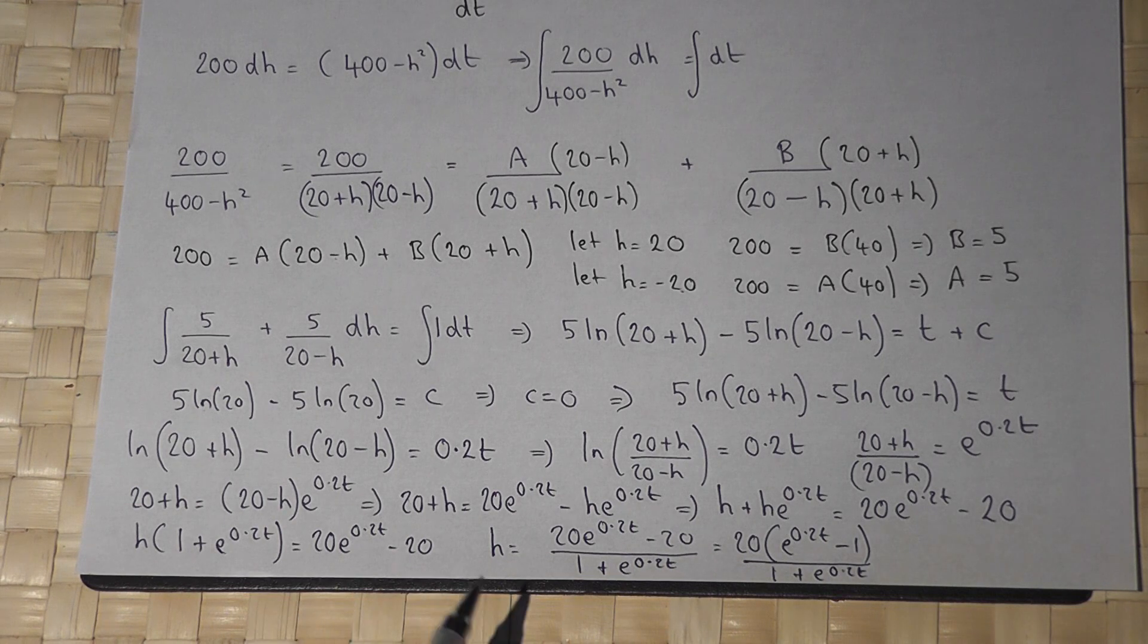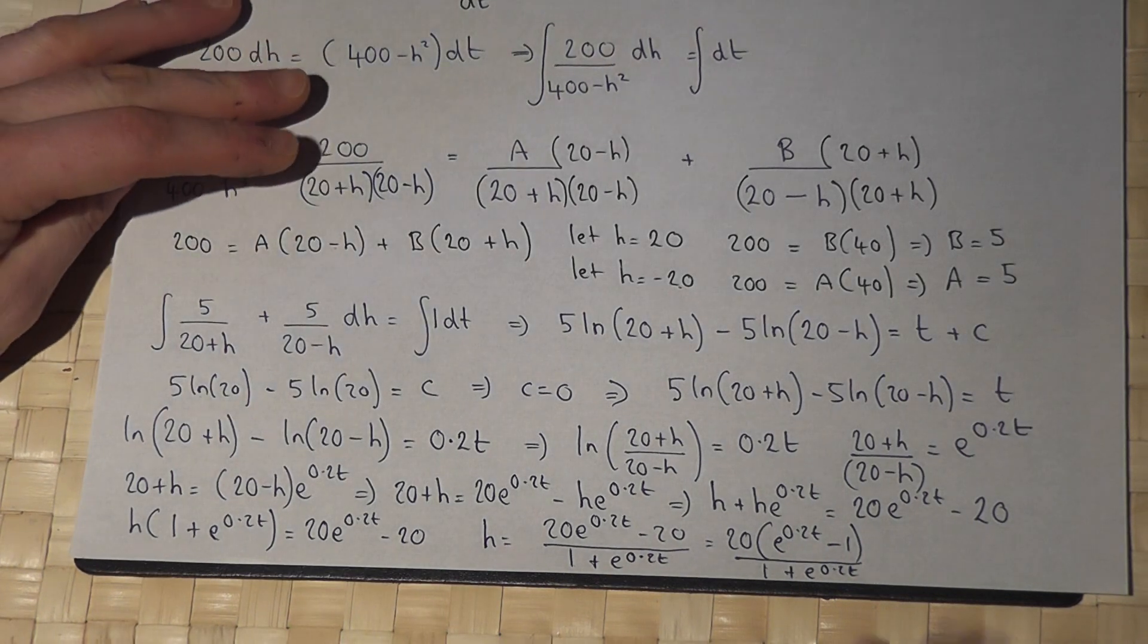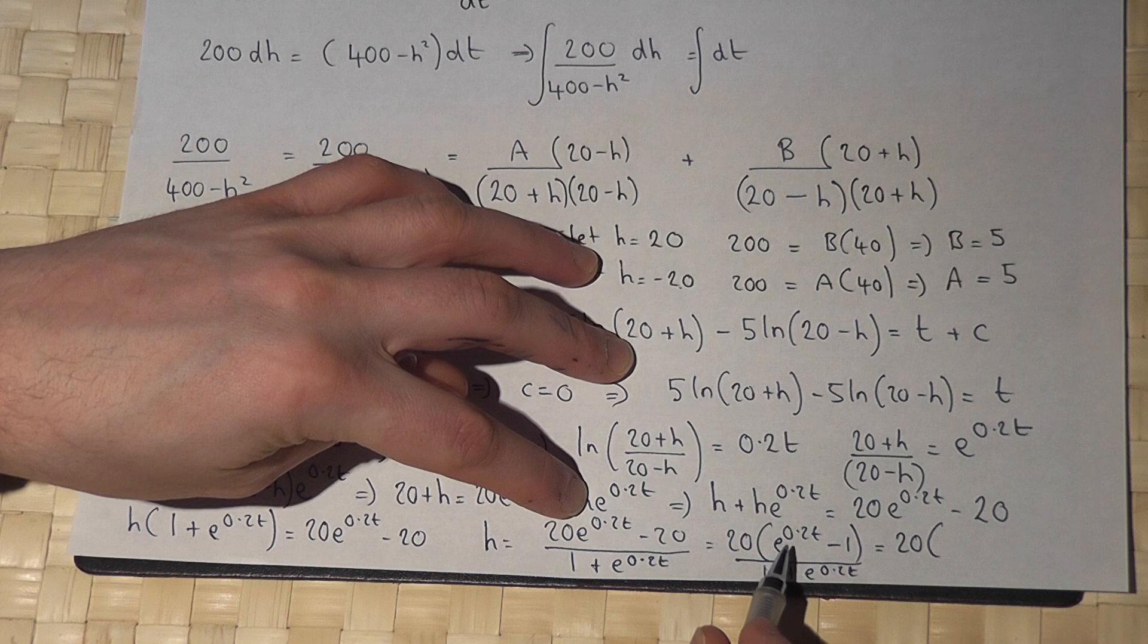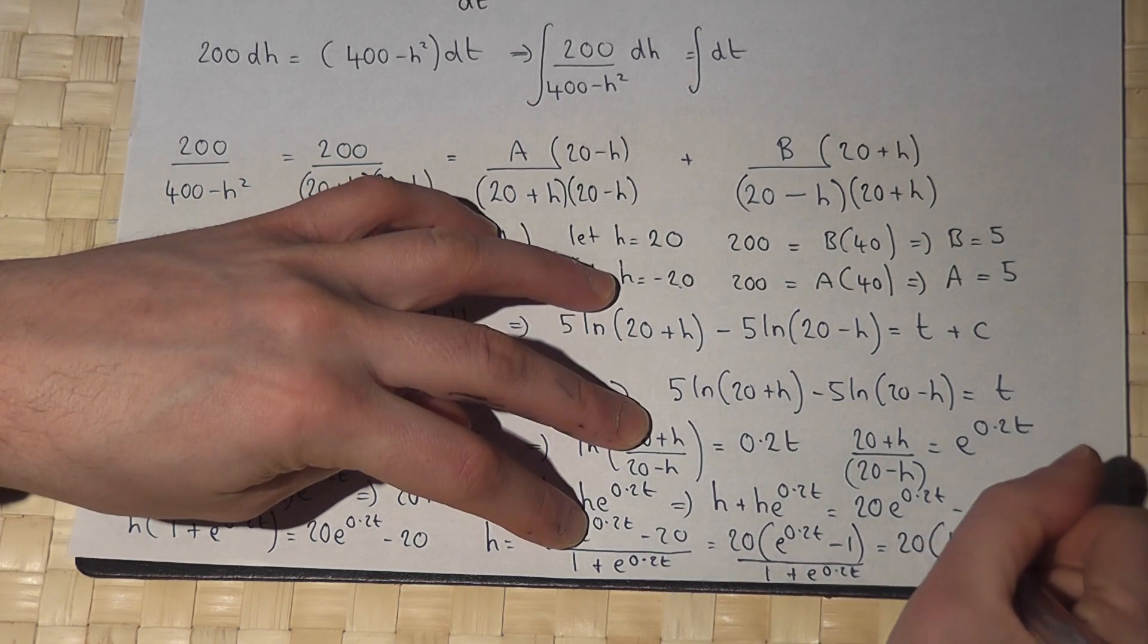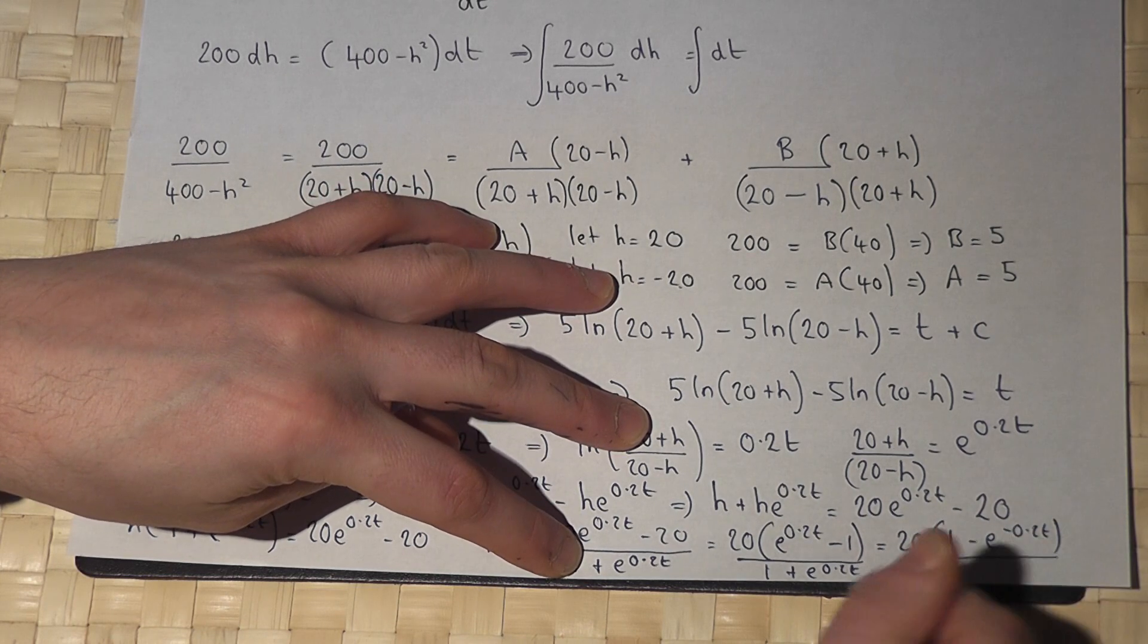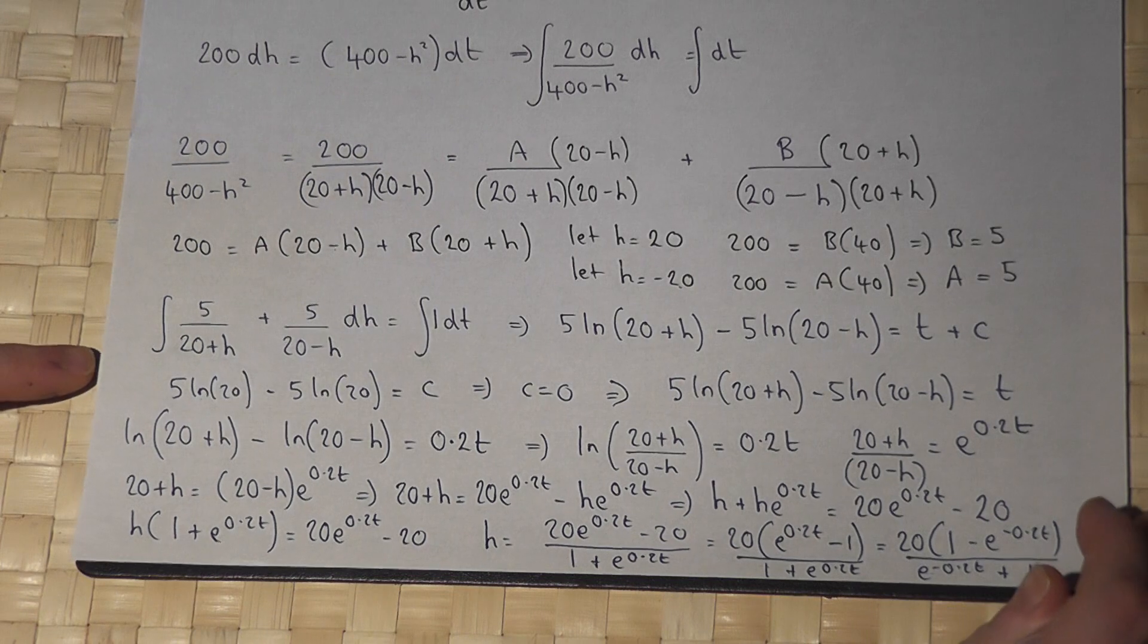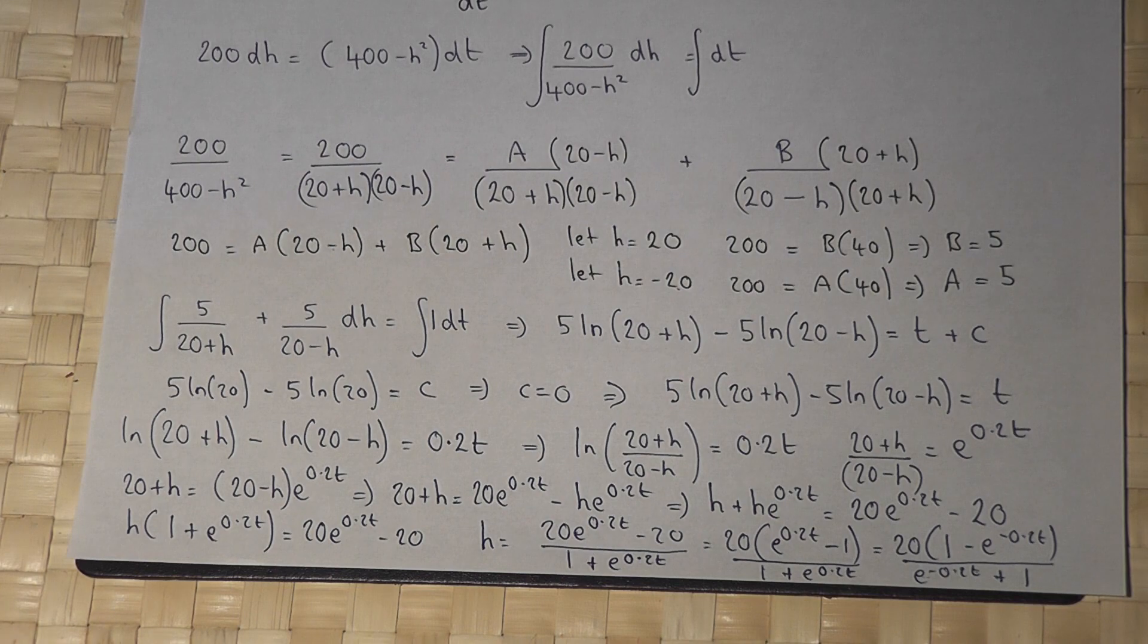Now, in the exam this was taken from, the answer was in a slightly different form, in which they divided all the terms by e to the 0.2t. So this could be written as 20 times 1 minus e to the minus 0.2t, over e to the minus 0.2t plus 1. That was a quirk of the exam question, but these are two equally valid solutions to the differential equation.